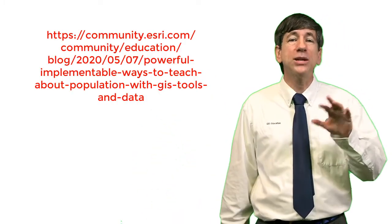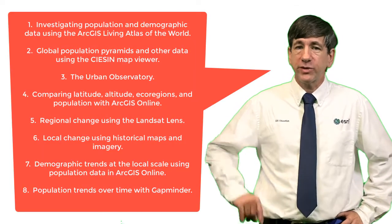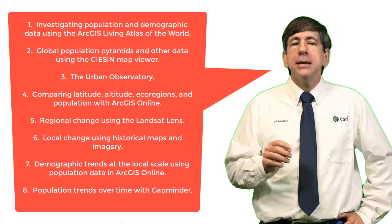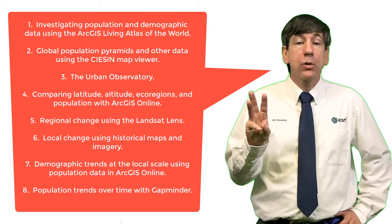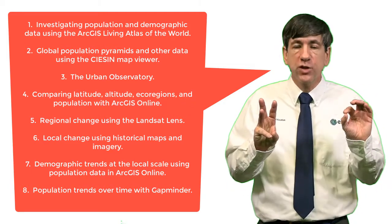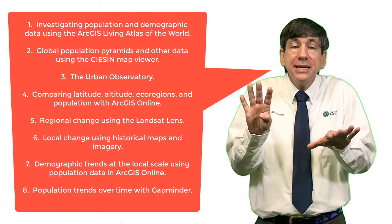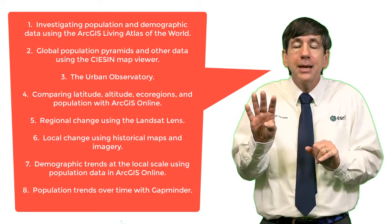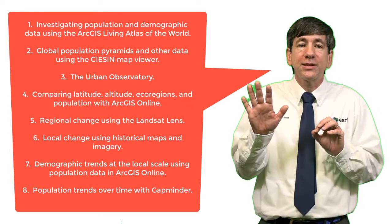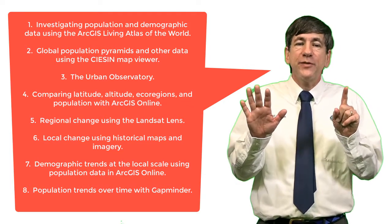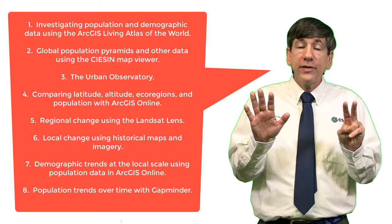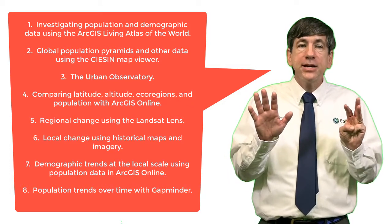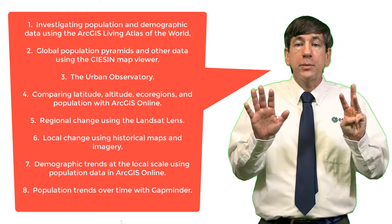First, examining world population and demographic data by country with the Living Atlas of the World. Number two, examining population dynamics using the SEDAC map viewer. Number three, examining demographic patterns in selected cities using the Urban Observatory. Number four, comparing world population density, latitude, altitude, and ecoregions. Number five, examining regional change with satellite imagery using the Landsat Lens. Number six, investigating local changes with historical maps and imagery. Number seven, examining demographic relationships and trends at the local scale. And finally, number eight, examining population trends over time and by country with Gapminder.